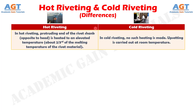Difference number 1: in hot riveting, the protruding end of the rivet shank opposite to the head is heated to an elevated temperature, which is about two-thirds of the melting temperature of the rivet material. So upsetting is carried out at elevated temperature. Whereas in cold riveting, no such heating is made — upsetting is carried out at room temperature.